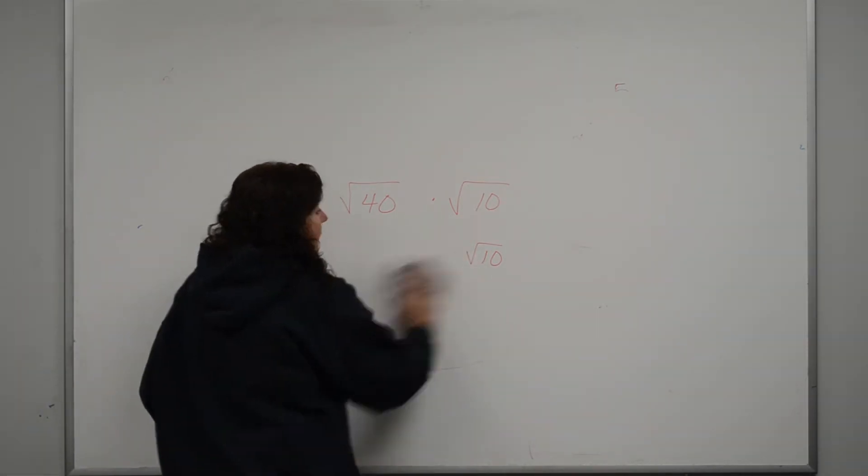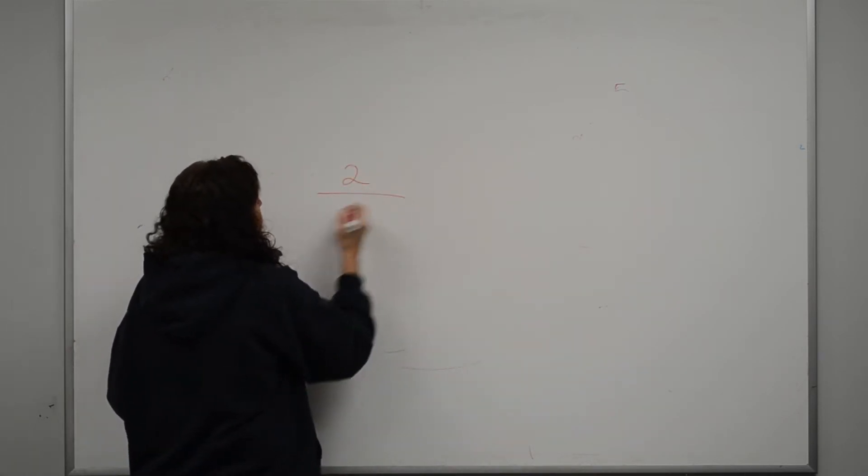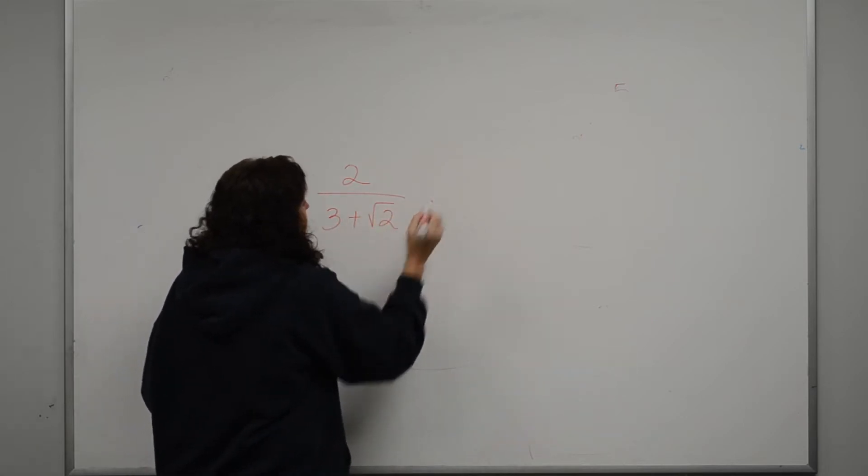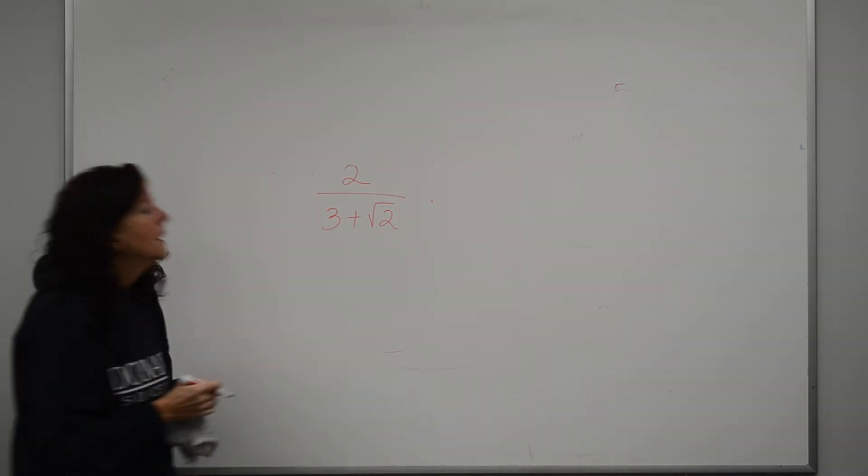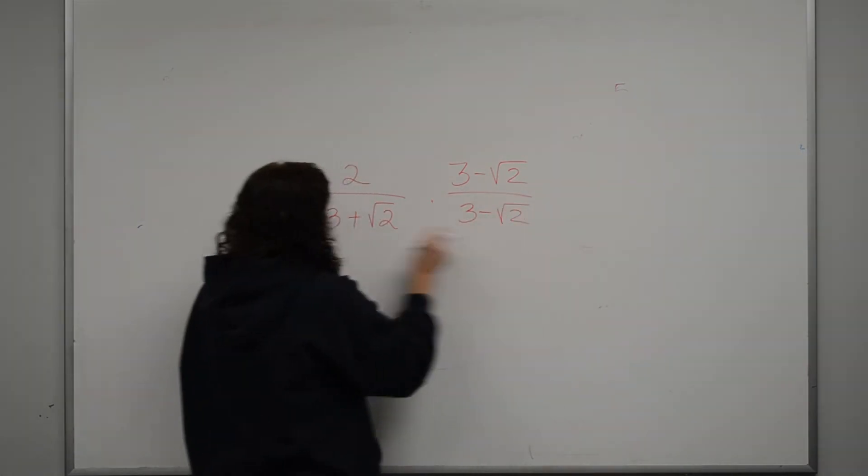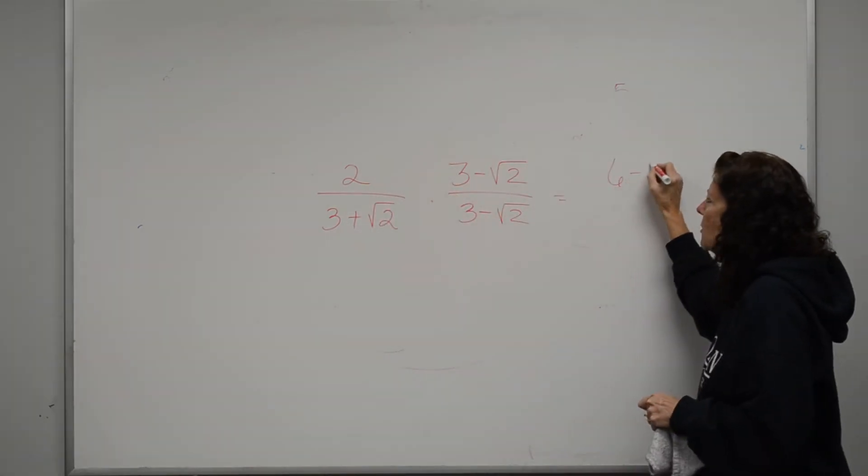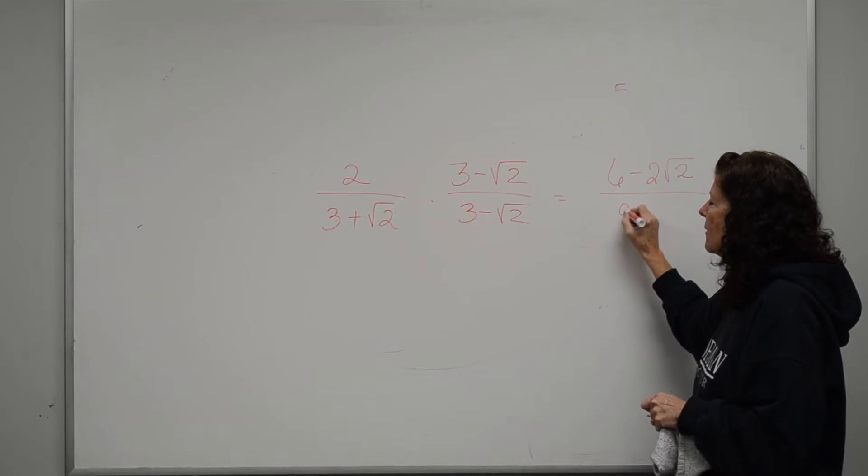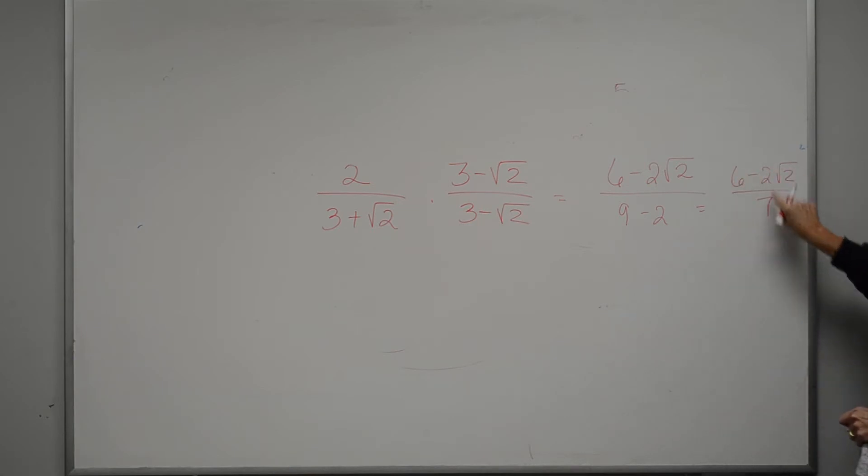Always remember, you cannot have a square root on the bottom of a fraction. So if I have 2 over 3 plus the square root of 2, I can't leave it like that. What do I have to do to get rid of it? Multiply by 3 minus the square root of 2. Okay. That being said, you only have to do FOIL on the bottom. On the top, you would have to distribute. On the bottom, I would have 9 minus 2, or 7. So I have 6 minus 2 on the square root of 2 over 7. If I can reduce those 3, I'm required to.